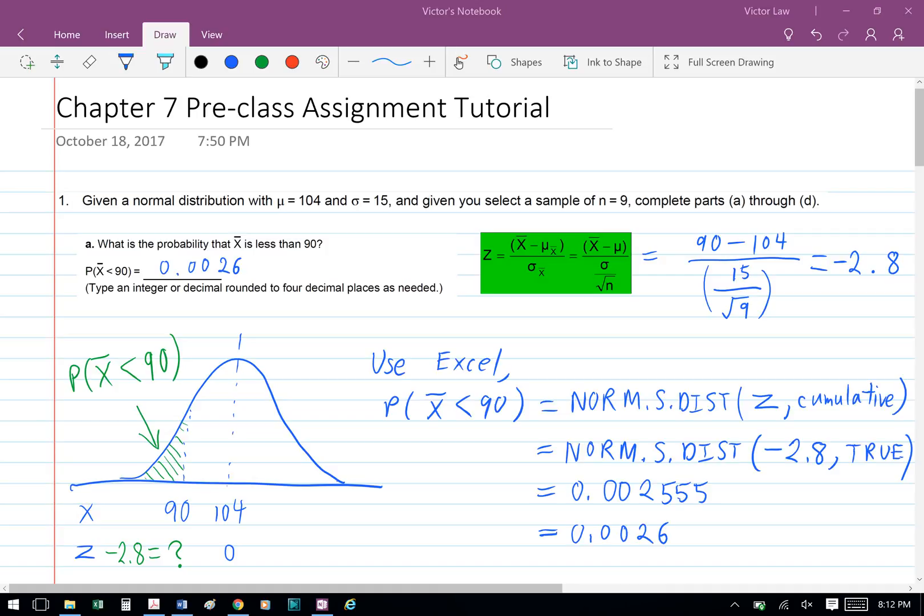Finally, to find the probability that X bar is less than 90, we're going to use Excel to help us solve that. We use the formula NORM.S.DIST(Z, cumulative).